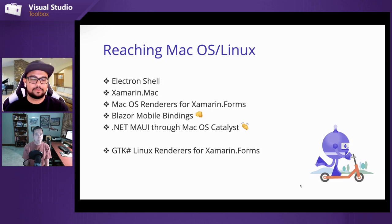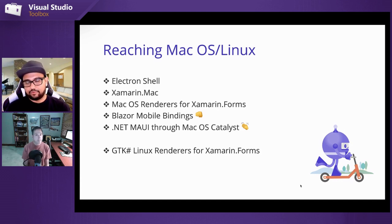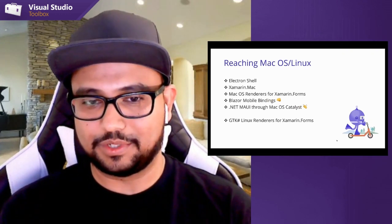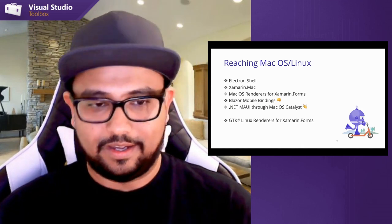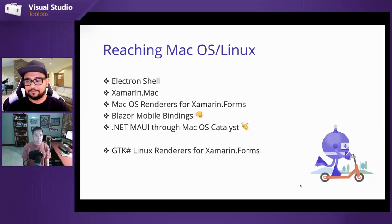If you want to do web, Electron is welcome. If you want to do XAML and C#, then Xamarin.Mac has always been there. You also have macOS renderers that sit on top of Xamarin.Forms, which is essentially what Blazor Mobile Bindings is doing right now. Eventually they will sit on top of .NET MAUI. They're also talking about .NET MAUI through Mac Catalyst, which is Apple's way of running iPad apps on the desktop. As a .NET developer, it gives me joy that my code goes to so many places.